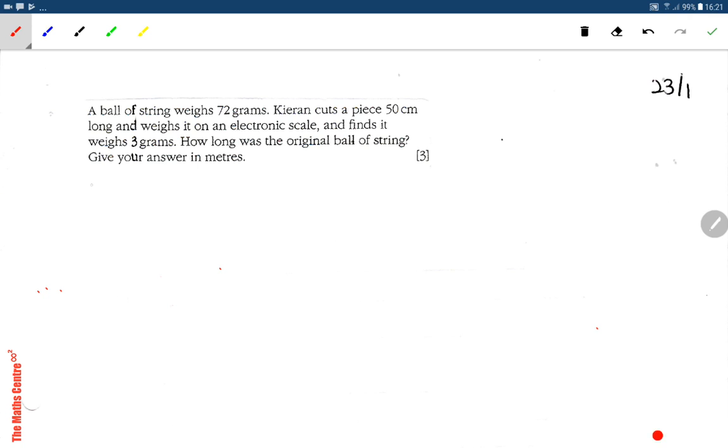So obviously this is a question about proportion or ratios. 50 cm of string weighs 3 grams, so x cm, which must be pretty long, weighs a bigger multiple of this—72 grams. How long was the original ball of string? Answer in meters.